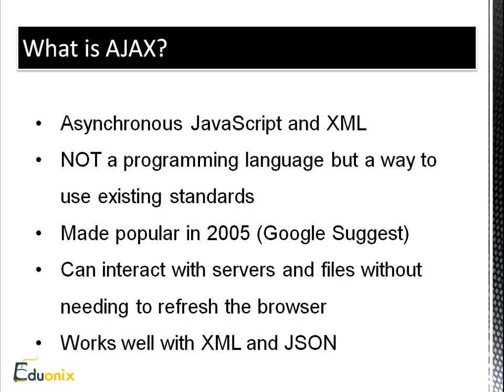When AJAX was created, it was created to work with XML — the X stands for XML. But in the past few years, a lot of developers have moved on to JSON just because it's very easy to deal with. It's simple, it's fast, it's lightweight, and it's not as cluttered as XML. There are situations where you would want to use XML instead of JSON, but JSON is more popular for the most part.